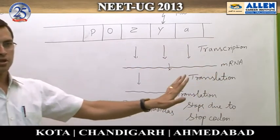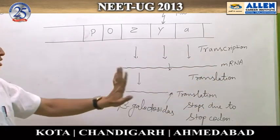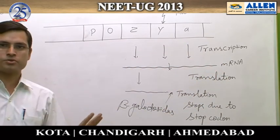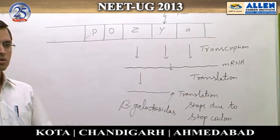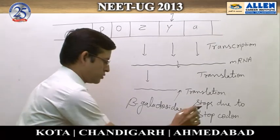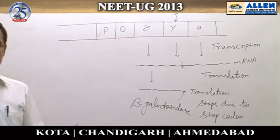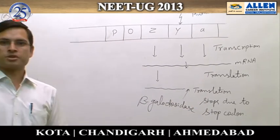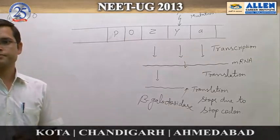Due to the nonsense mutation, permease will not be produced and transacetylase will also not form. Only beta-galactosidase will be produced. So the correct answer to this question is the second option: beta-galactosidase.